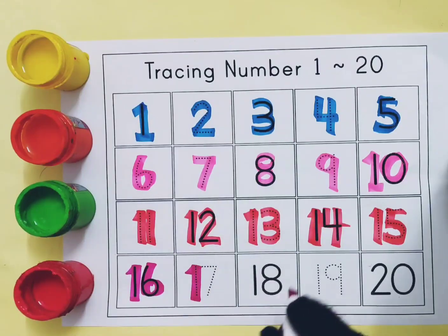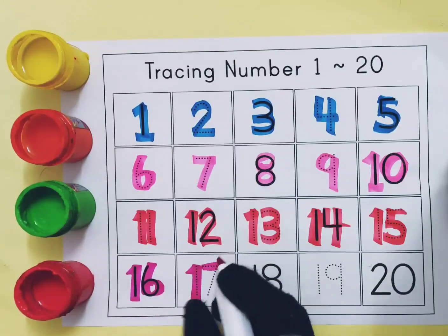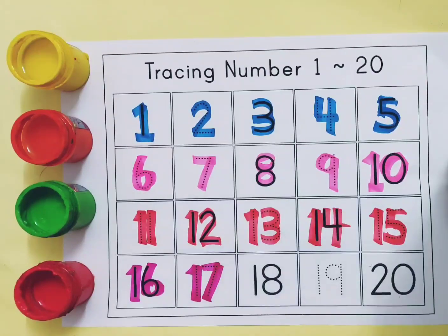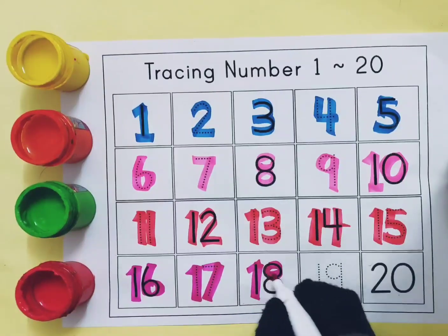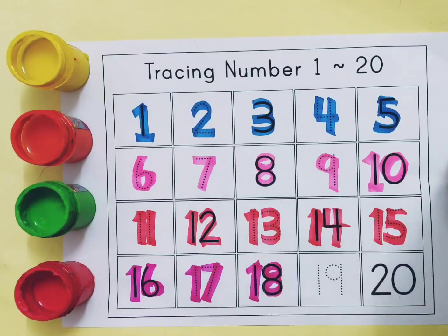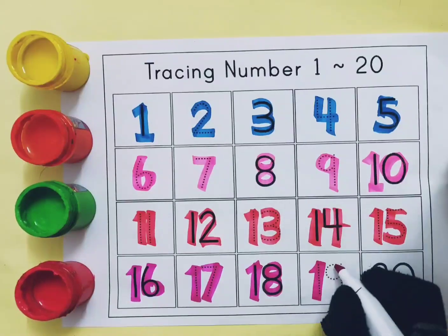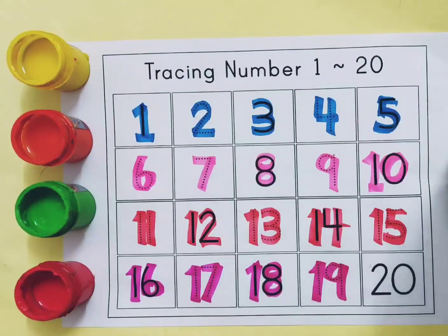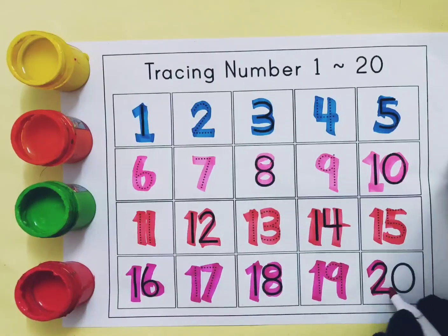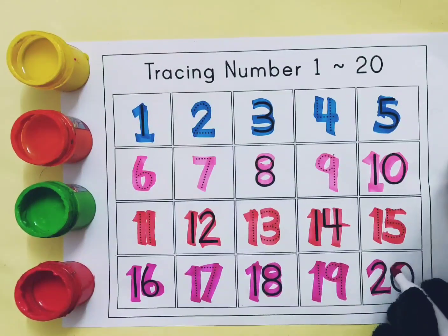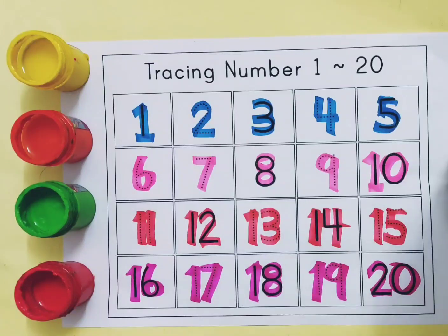This is 17, S-E-V-E-N-T-E-E-N, 17. This is 18, E-I-G-H-T-E-E-N, 18. This is 19, N-I-N-E-T-E-E-N, 19. This is 20, T-W-E-N-T-Y, 20.